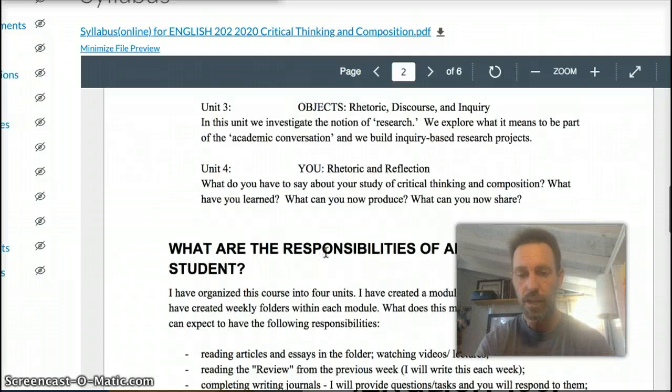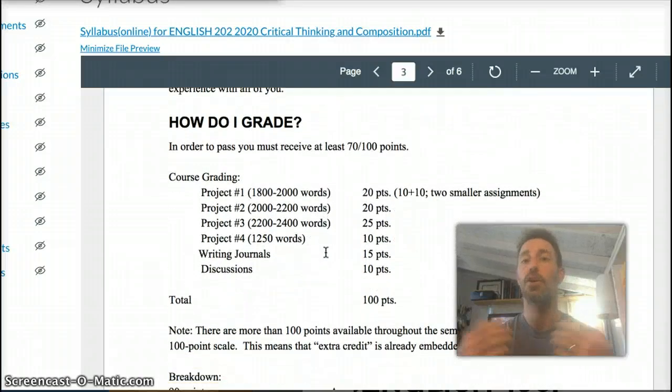Now, I want to say a couple of things about the grading. The course is worth 100 points total and you collect points as we go. You collect points on the major assignments, you collect points on the writing journals I ask you to do each week, and you collect points on the discussion boards that I invite you to come to. And so you're just collecting points throughout the semester and all of those points are then put over 100 and that equates to your final grade in the course.